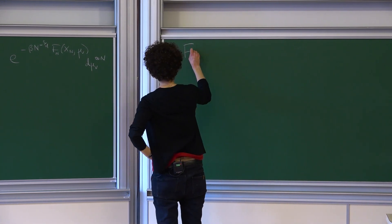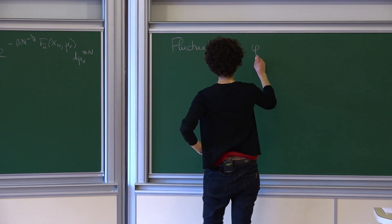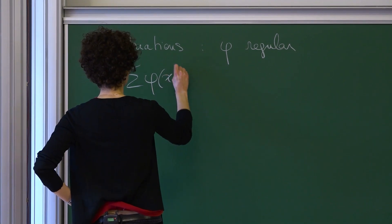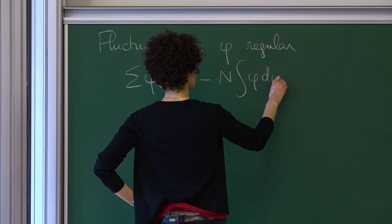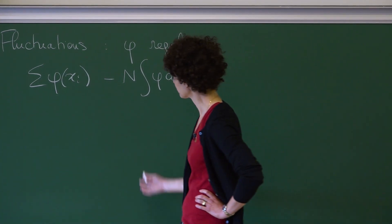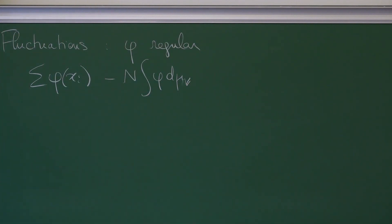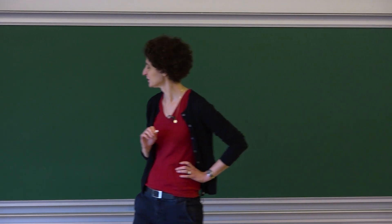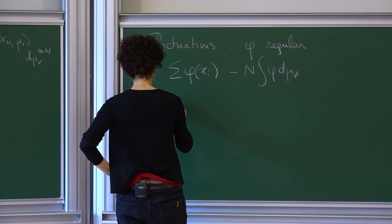What we want to look at is linear statistics: phi regular, and we want to look at the sum of phi of xi. We'll probably have to subtract off the expected behavior and understand the size of this random variable under this measure. There is only one proof so far, and it goes by looking at the Laplace transform of such fluctuations, or of linear statistics.